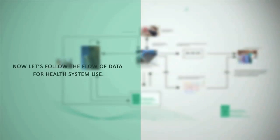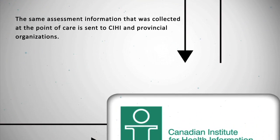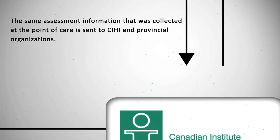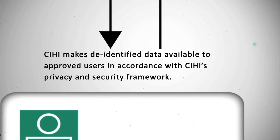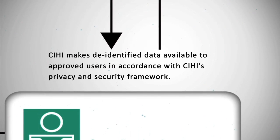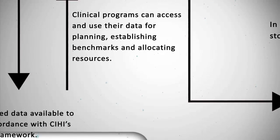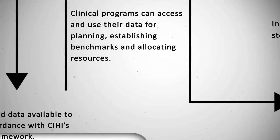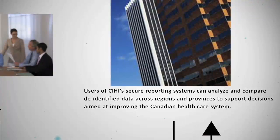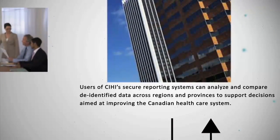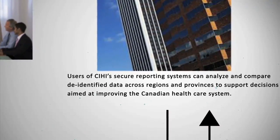Now let's follow the flow of data for health system use. The same assessment information that was collected at the point of care is sent to CIHI and provincial organizations. CIHI makes de-identified data available to approved users in accordance with CIHI's privacy and security framework. Clinical programs can access and use their data for planning, establishing benchmarks, and allocating resources. Users of CIHI's secure reporting systems can analyze and compare de-identified data across regions and provinces to support decisions aimed at improving the Canadian health care system.